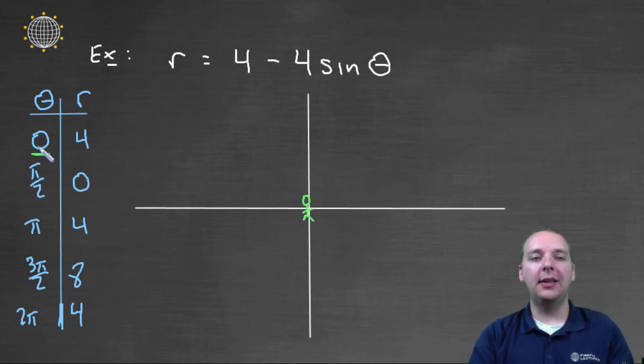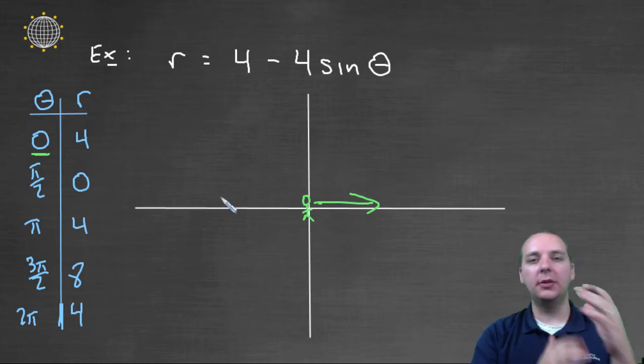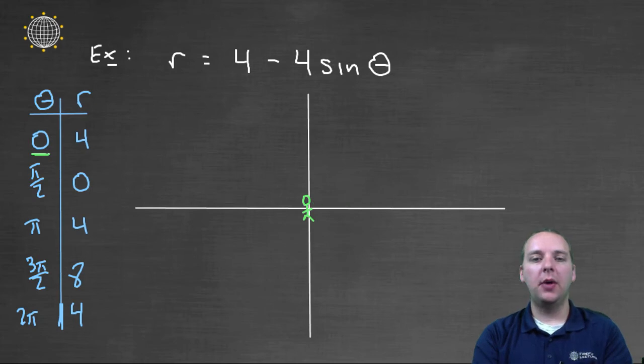So in the first point, the theta is zero, so he's facing this direction, and we're going to go four units out in that direction. It doesn't matter about the xy axis and what's positive and what's negative. He's going a positive four units in the direction that he's facing. So we would go out a total of one, two, three, four units, and this would be the first point right here.